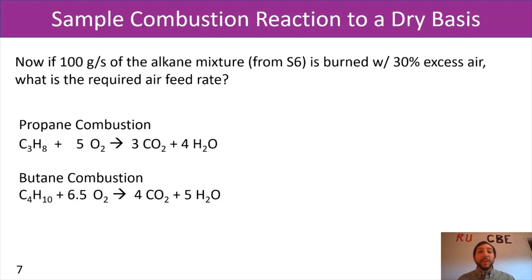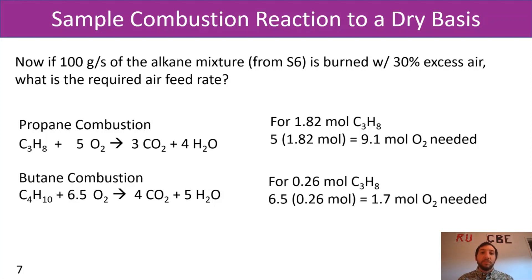Now for this reaction, we need to figure out how much propane and how much butane is going to, well, all of it's got to be combusted. So we need to figure out how much oxygen is needed for combusting all your propane and how much is needed to combust all your butane. Now, from that practice problem that you just worked on from slide six, if you did all the numbers correctly, you'd find out that you had 1.82 moles of propane in your mixture. And in that case for 1.82 moles of propane, I'm going to need 9.1 moles of oxygen. Similarly, if I do that same process, I would have found that I have 0.26 moles of butane and I'm going to need 1.7 moles of oxygen. And now if I sum up those two amounts, I would get 10.8 moles of oxygen that I would need to combust all of the hydrocarbons in this gas stream.